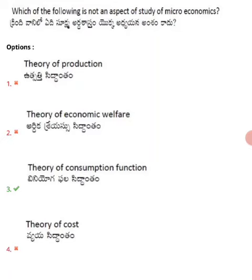So all three options — theory of production, theory of welfare, and theory of cost — come under microeconomics. Only option three, the theory of consumption function, comes under macroeconomics. Therefore, option three is the correct answer. Thank you all, and we will see the remaining questions in the next video.